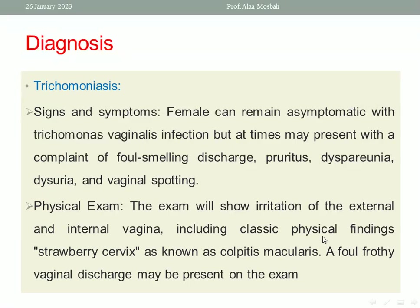What about trichomoniasis? Usually the woman presents with foul, offensive-odor discharge, pruritus, dysuria, dyspareunia, and vaginal spotting. On examination, there is frothy discharge, and the cervix has a strawberry or flea-bitten appearance, with an offensive odor.